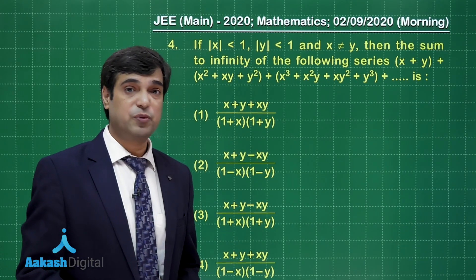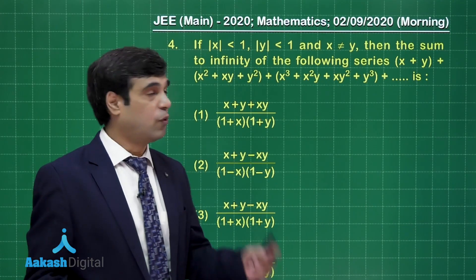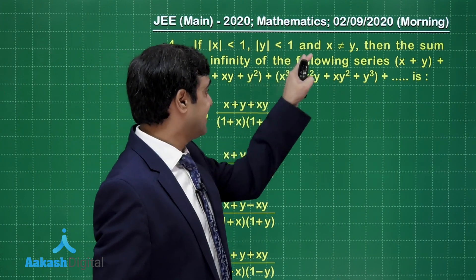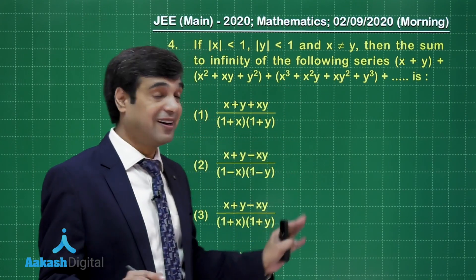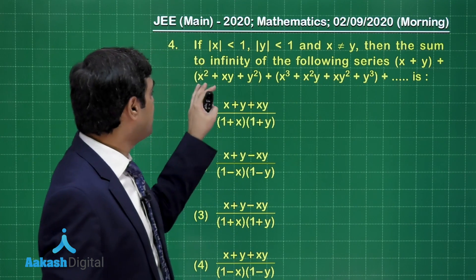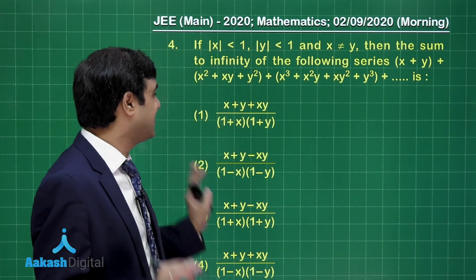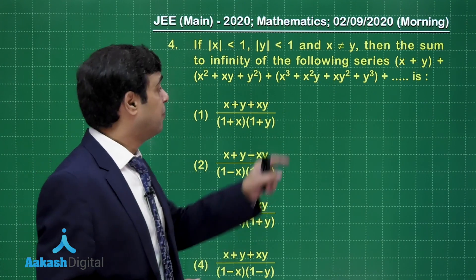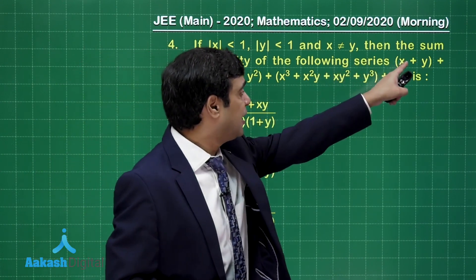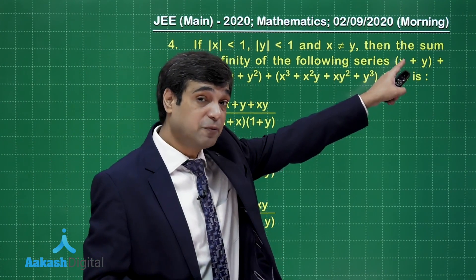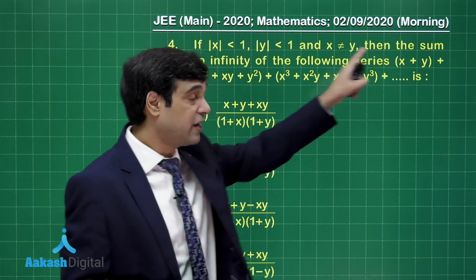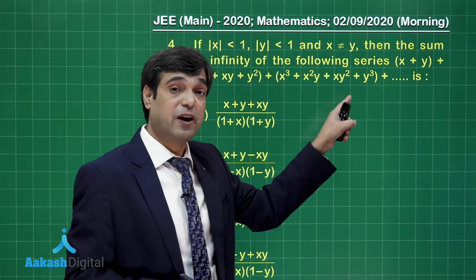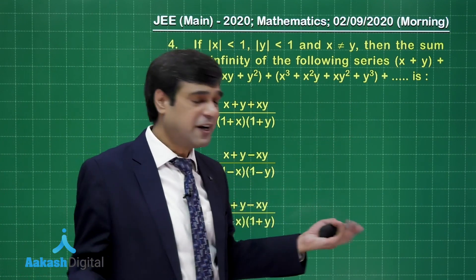Moving on to question number four: if mod x is less than one, mod y is less than one, and x and y are distinct, then find the sum to infinity of the given series. We can clearly visualize: if we multiply a term by (x minus y), it becomes x² minus y², then x³ minus y³, x⁴ minus y⁴. So the question can be solved this way.